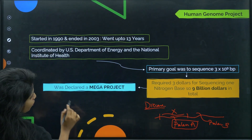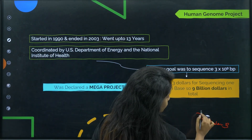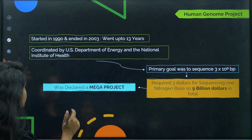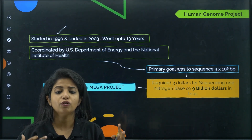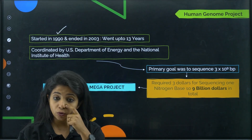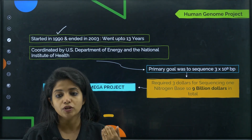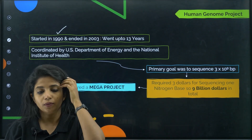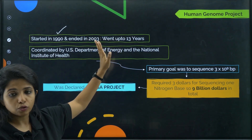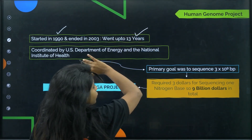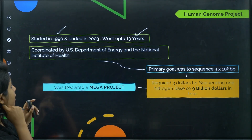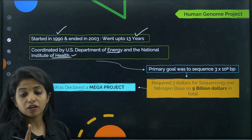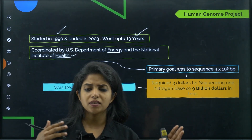That was the ultimate aim of the Human Genome Project. It started in the year 1990 — this date is important to remember. It was coordinated by the US Department of Energy and the National Institute of Health. After that, many companies from Japan, China, and other countries also came in and helped in the whole process.